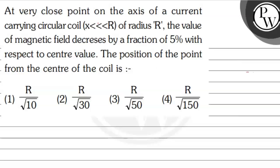Hello. Let us read the question first. At a very close point on the axis of a current-carrying circular coil of radius R, the value of magnetic field decreases by a fraction of five percent with respect to the center value. The position of the point from the center of the coil is — let us discuss the key concept here first.